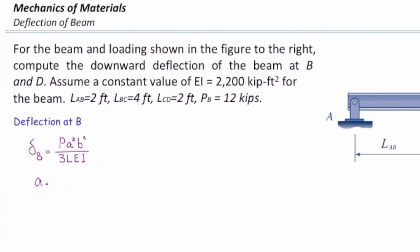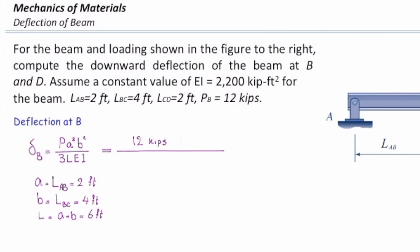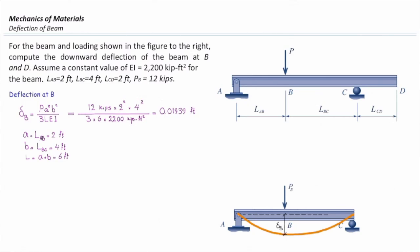The value of a is the distance of the force to the left, equal to L_AB = 2 feet. b is the distance to the right, equal to L_BC = 4 feet. The total length L is 4 + 2 = 6 feet. Plugging the values in: P = 12 kips, a = 2, b = 4, L = 6, and EI = 2200 ft². Since all units are in kips and feet, no conversion is needed. The calculation gives a deflection at point B of 0.01939 feet, directed downward.